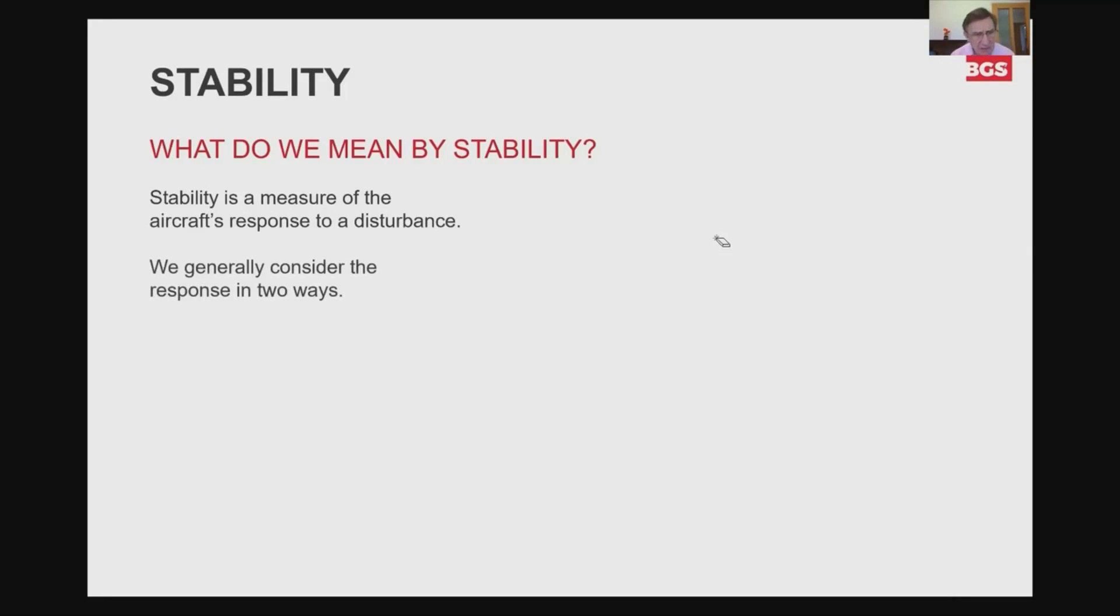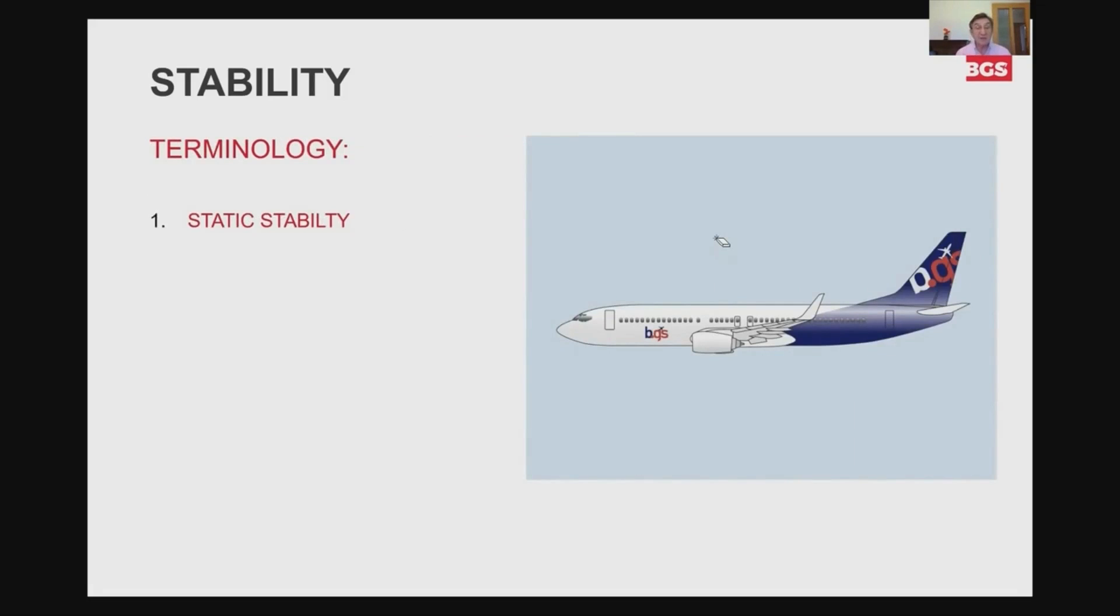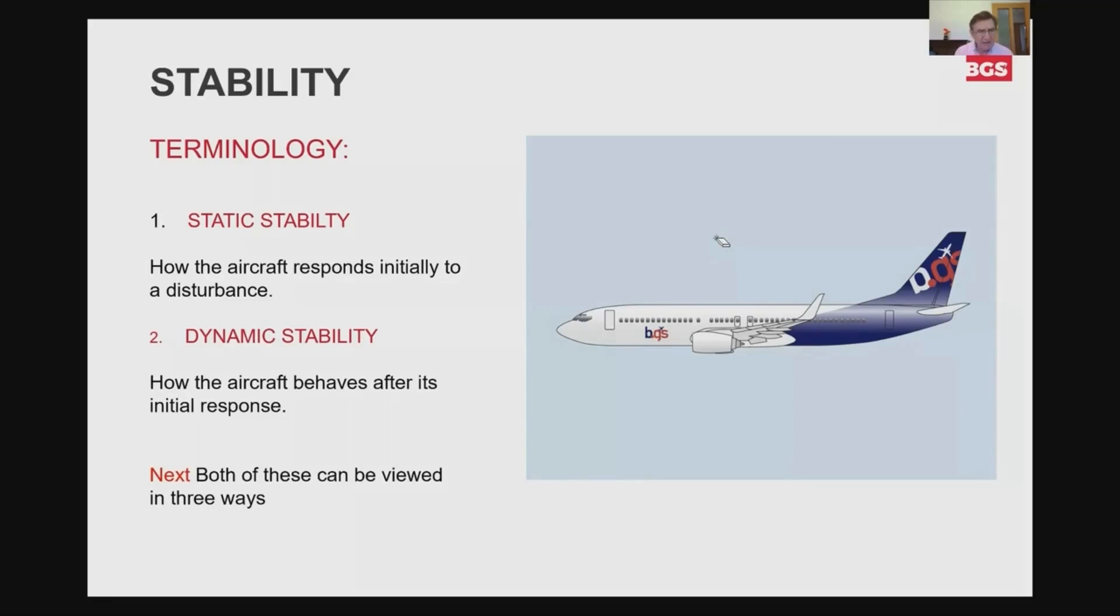And we can generally consider that response in two ways. So we can have what we call static stability. And static stability is about our initial response. What does the airplane do? Does it head off in the right direction? So in this one where I got disturbed knocking up, is the initial response to put the nose down or is the initial response to go and do something? It could be to put the nose up. It could be to make the nose go left or right. But we're looking for what it is. And then we got the other one is dynamic stability, which largely I'll look at that as where do we end up? Do we end up in the right place or not? It's how the aircraft behaves after the initial response. So that would be there. So next then we're going to be looking at each of these, the static and dynamic, but each of those can be viewed in three ways.